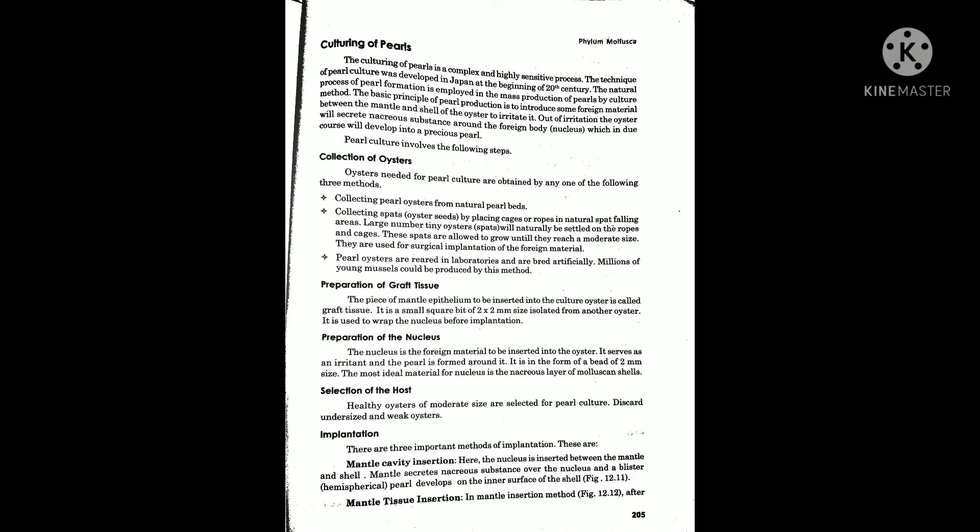The second step is the preparation of grafted tissue. A piece of mantle epithelium is inserted into the culture — it is called grafted tissue. It is a small square bit of 2x2 mm size isolated from another oyster. It is used to wrap the nucleus before implantation. This 2x2 mm square-shaped epithelial tissue is taken from another oyster and inserted as grafted tissue.